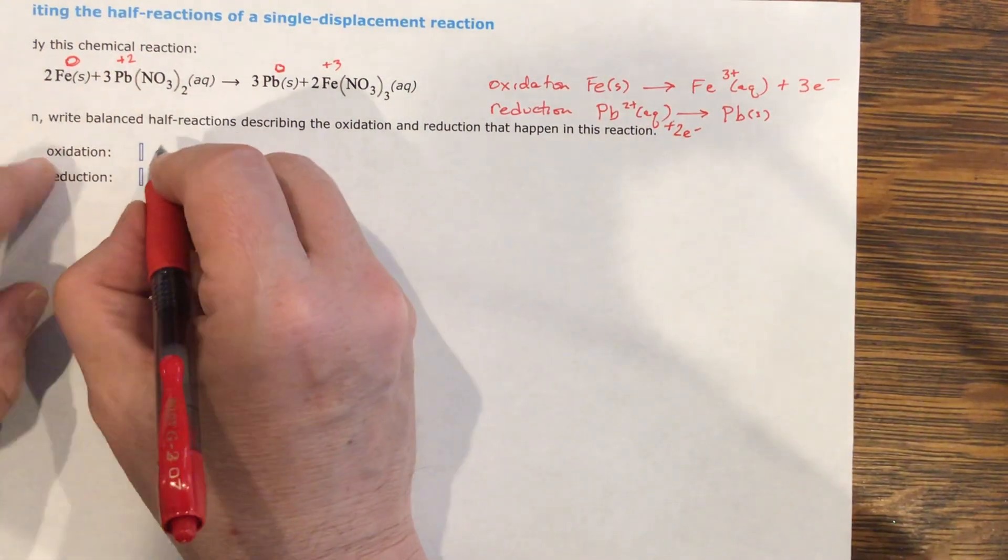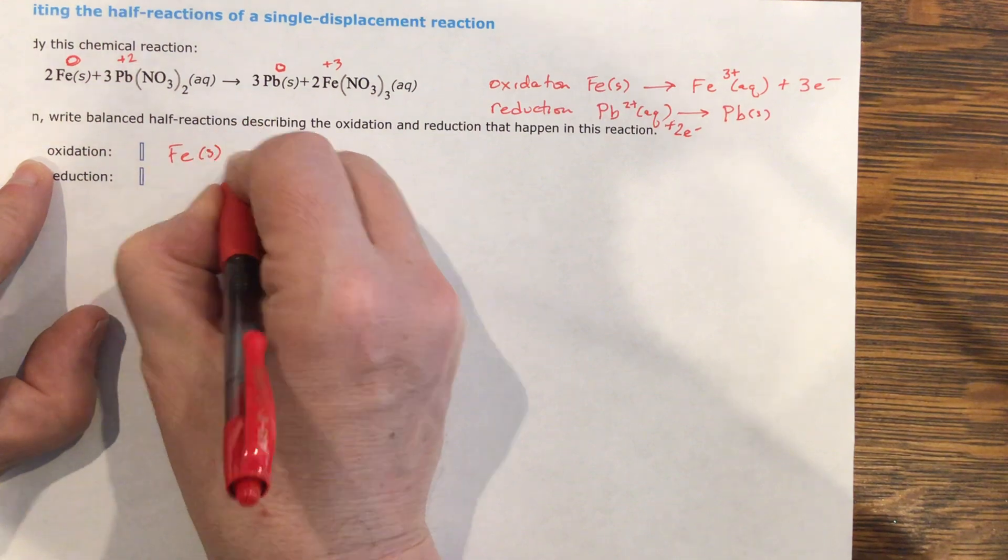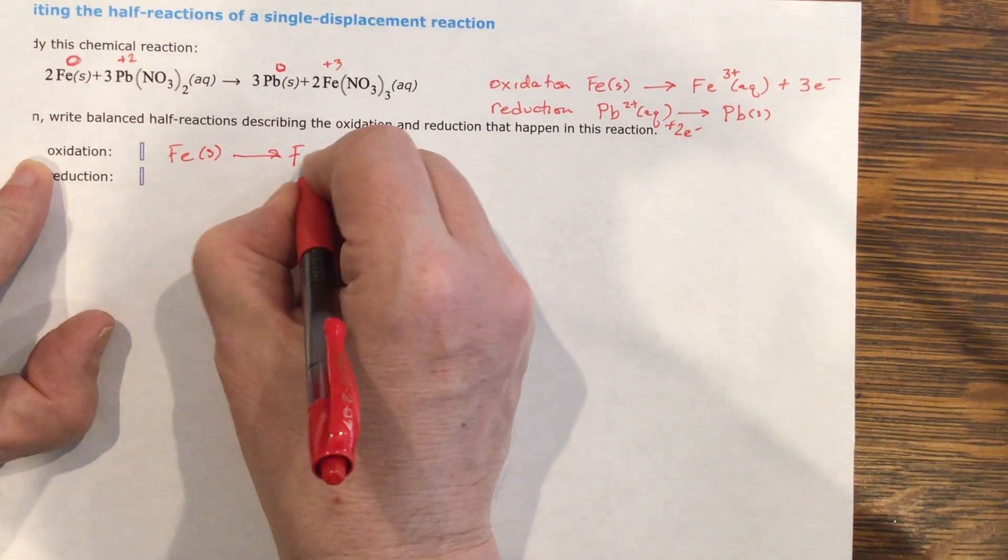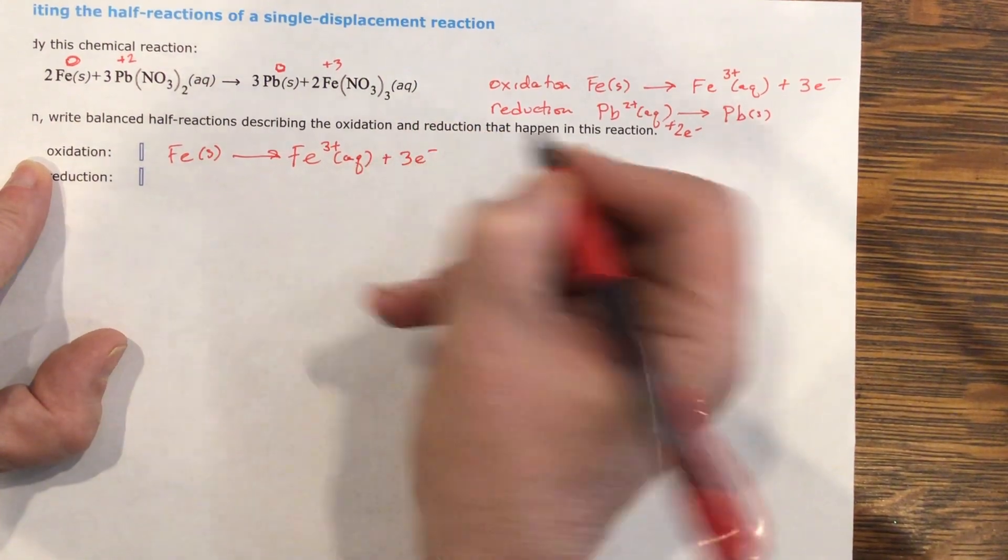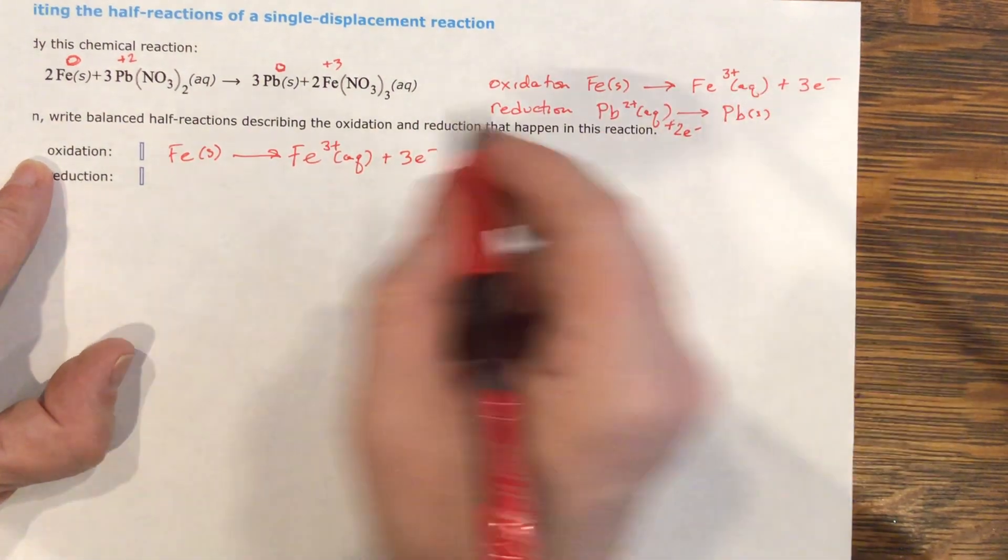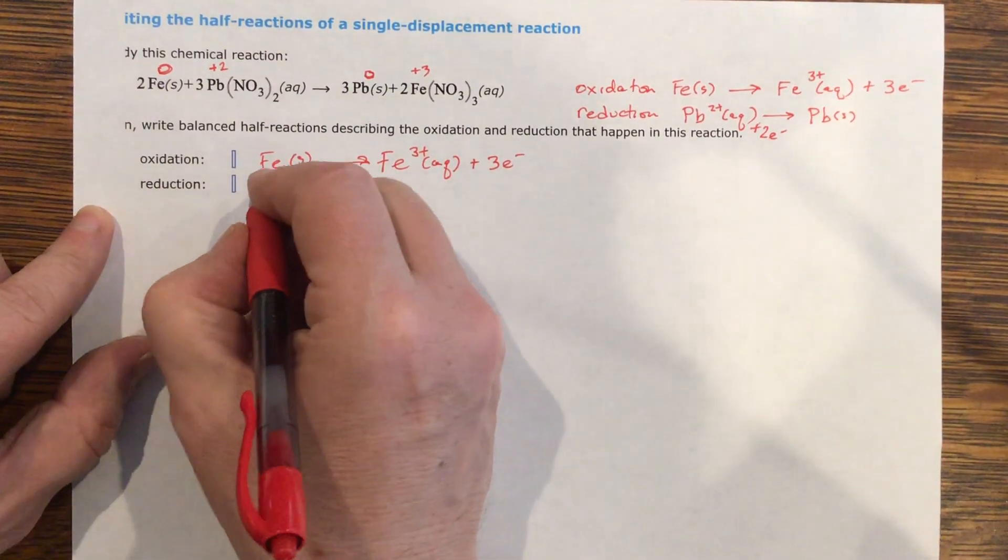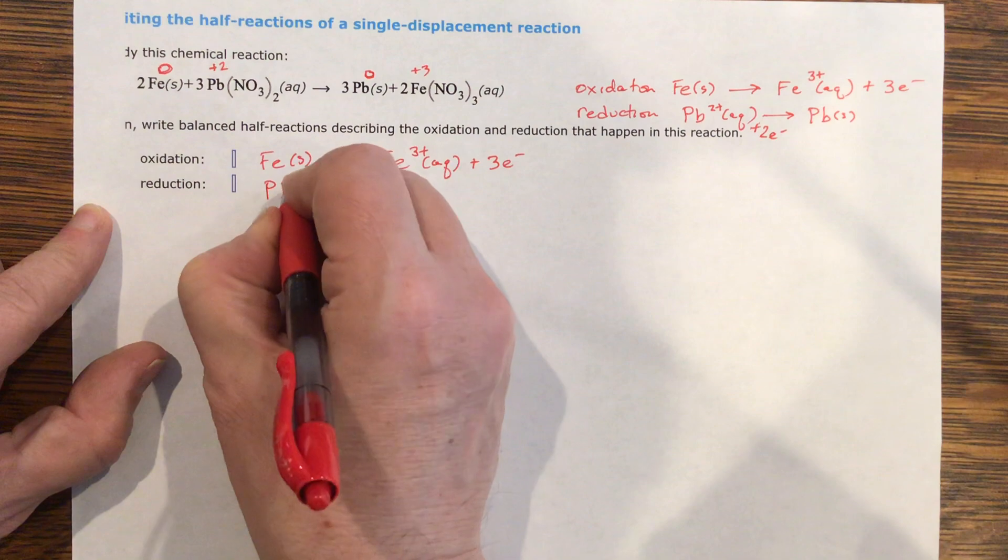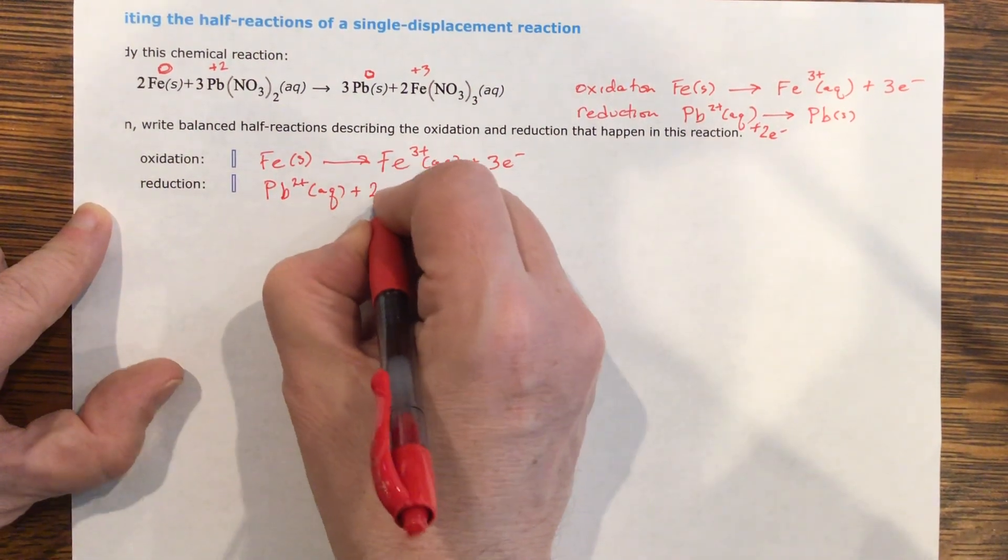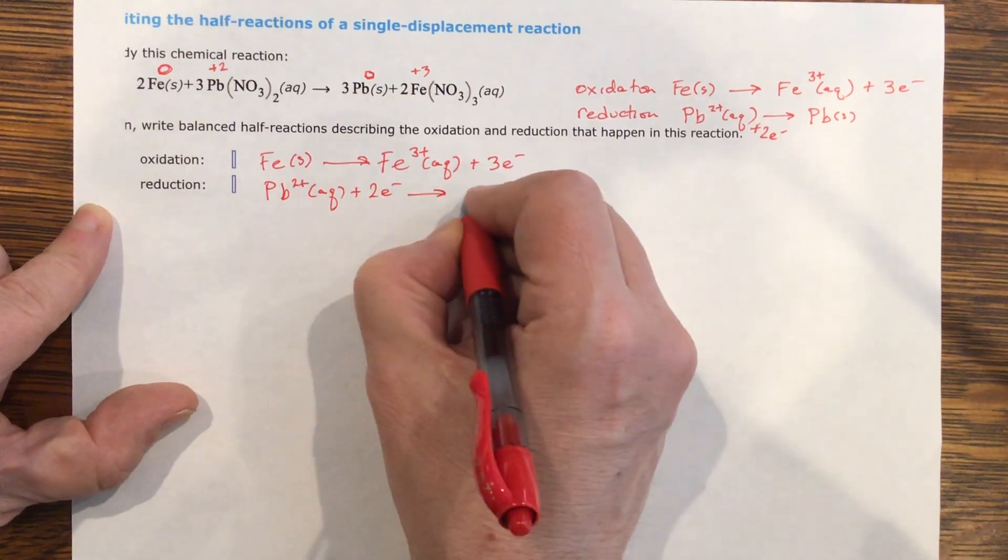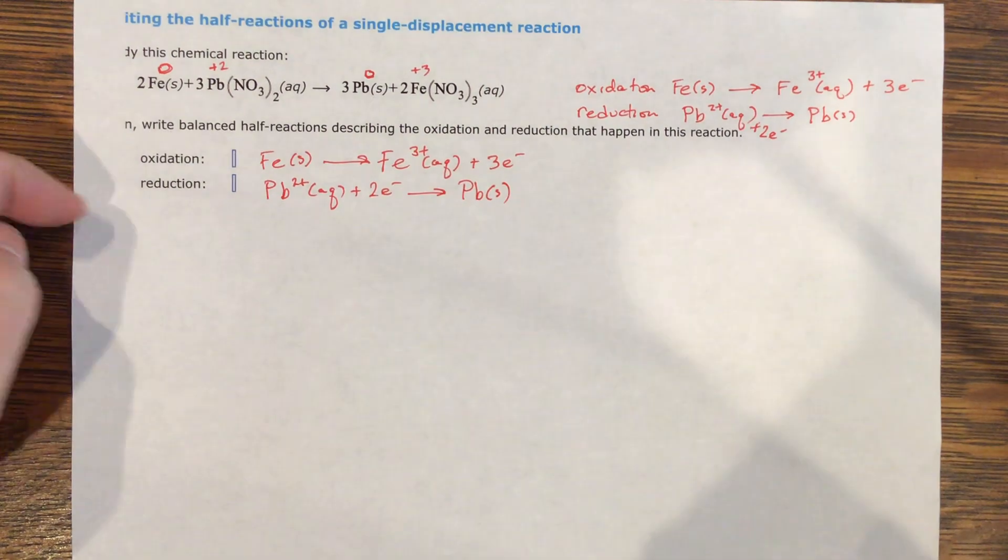And that is your answer. Your oxidation step is Fe solid yields Fe³⁺ aqueous plus three electrons. That's your oxidation. And they're asking for reduction. Your reduction is your other one. Pb²⁺ which was aqueous plus your two electrons yields Pb solid. I hope that helped you.